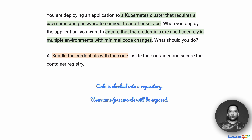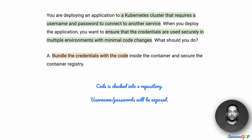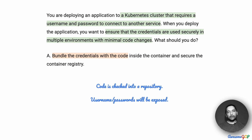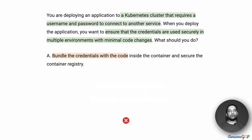So checking in code is not an approach at all. Since we are going to have multiple environments, we might even have to have multiple check-ins — one for the testing environment, one for staging, one for production. Either way, this is not a good approach, and therefore we can easily eliminate Option A.